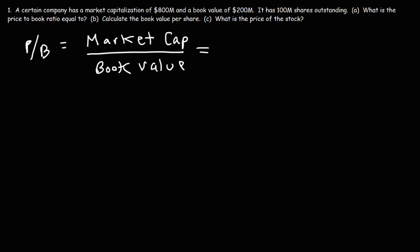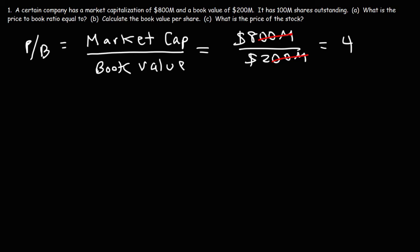So the market capitalization is $800 million in this example, and the book value is $200 million. If we cancel the two zeros and the unit M, it's going to be 8 divided by 2, which is 4. So the PB ratio for this particular company is 4.